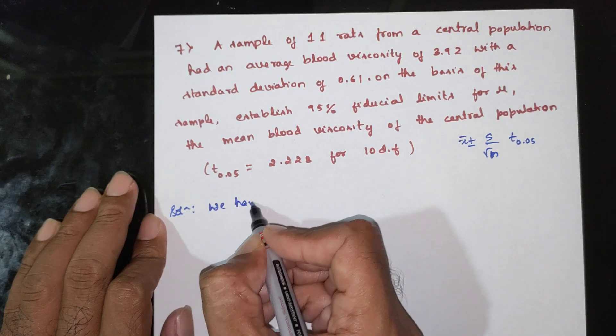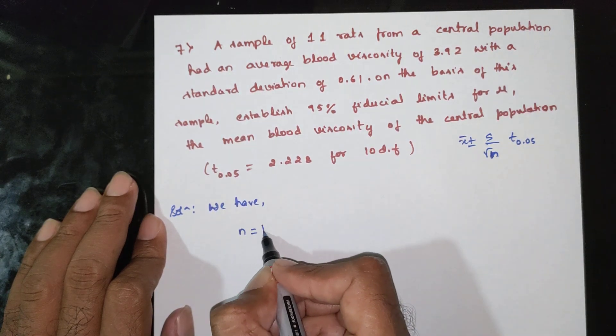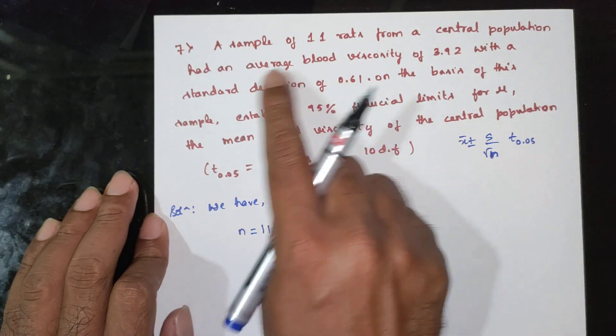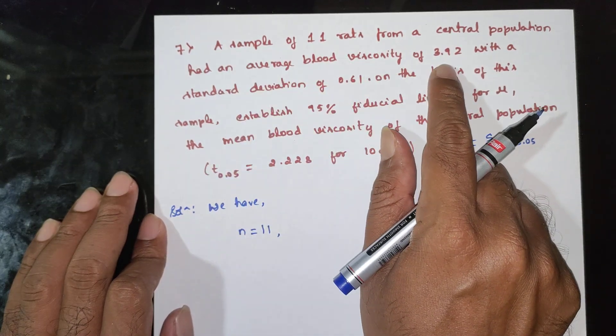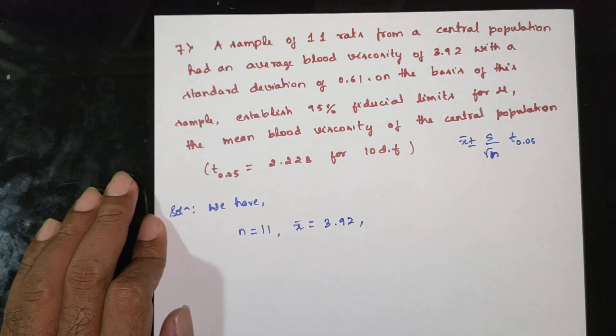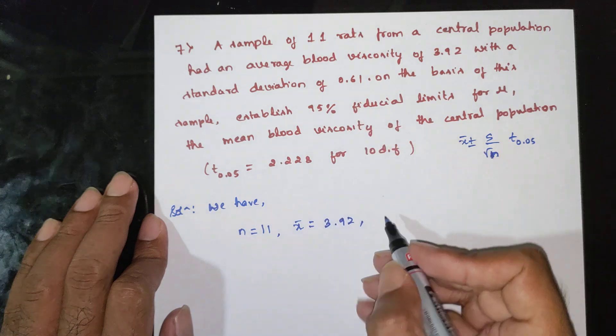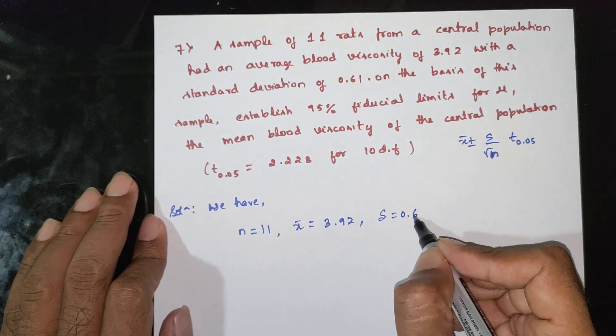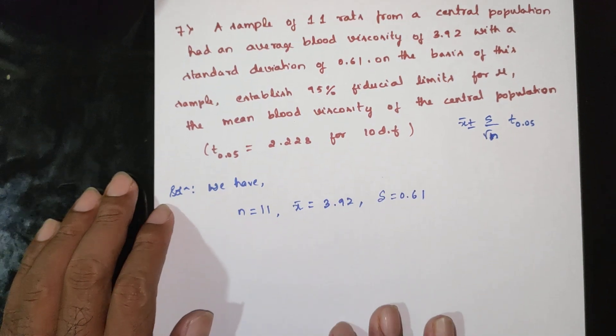We have n equals 11, x bar equals 3.92, and s equals 0.61. This is the given data.